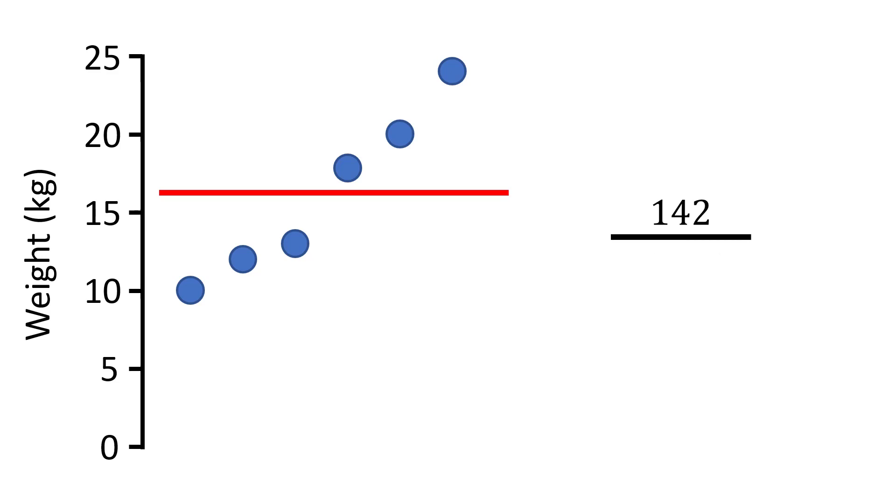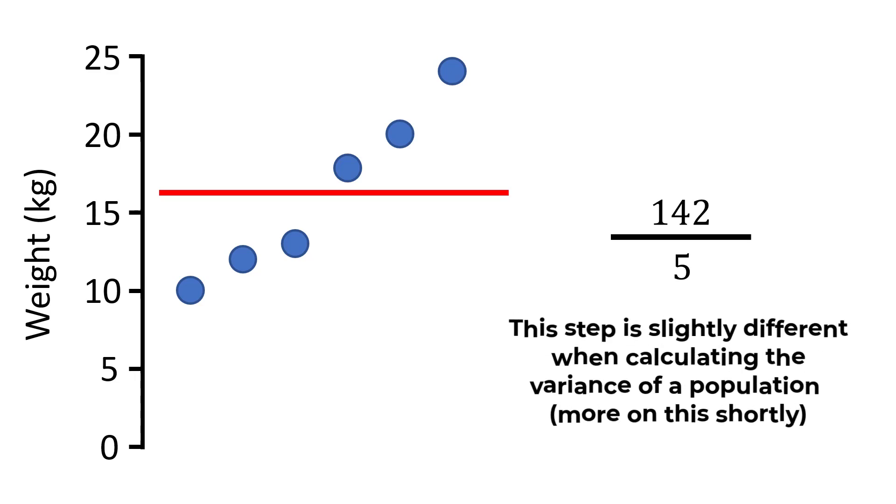Doing so gives 5. So we divide the answer by 5. And it's worth mentioning that this process slightly differs if you have to calculate the variance of a population. And I'll go into a bit more detail about this later on in the video.